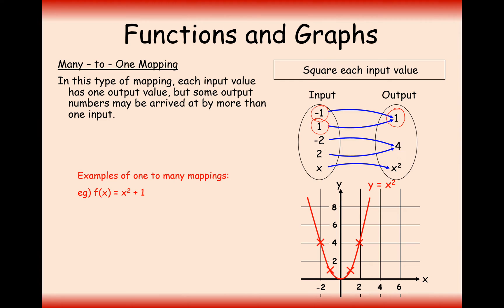Other types of many-to-one mappings include x squared plus anything else, really. As long as it's got an x squared in there, it's probably going to be a many-to-one mapping. Sine x, let me just remind you of the sine x graph. It's going to look a little bit like this. For any output value, there are multiple, if not an infinite, amount of input values that could have reached that output value.